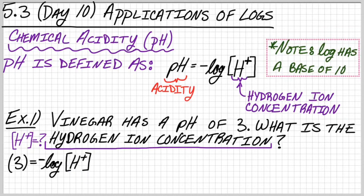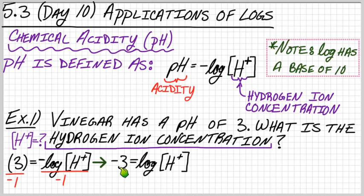We have 3 equals negative log [H+]. This first step is really important. Let's take care of this negative coefficient, then we can handle the logarithm. Divide both sides by negative 1 and make the 3 negative on the other side. This seems easy, but I've seen a lot of people forget it. So we've got negative 3 equals log [H+].